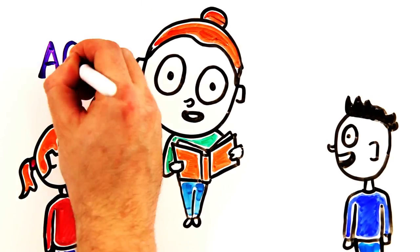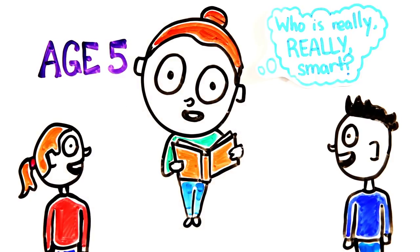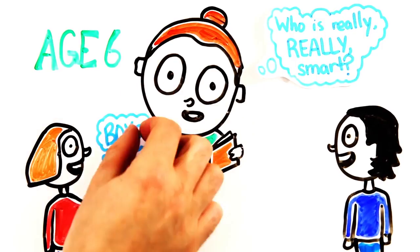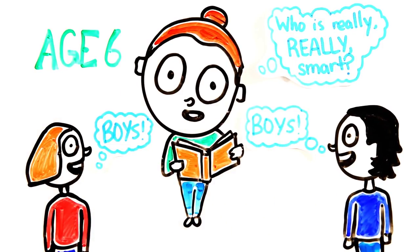When told a story at age 5 about a person who is really, really smart, both boys and girls associate intelligence with their own gender. But by age 6, both girls and boys picked a male character as the smartest.